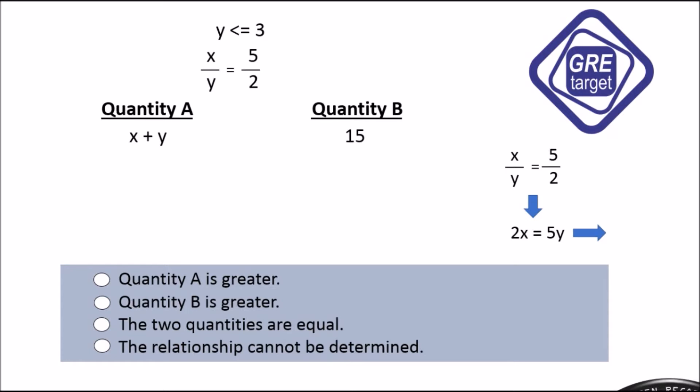We will divide 2 by each side, so x equals 2.5y. Now we will replace x in quantity A, so x we have 2.5y plus y, which equals 3.5y.